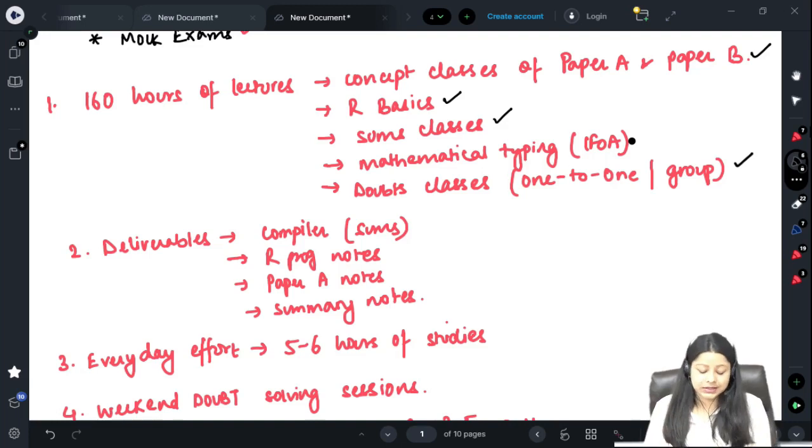Along with these things we also provide you hard copies of the compiler. Compiler contains all the sums of all the chapters which is segregated section wise. We have R programming notes prepared exhaustively, paper A concept notes and summary notes for all the chapters.